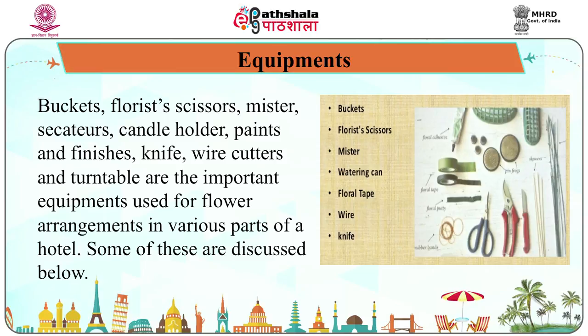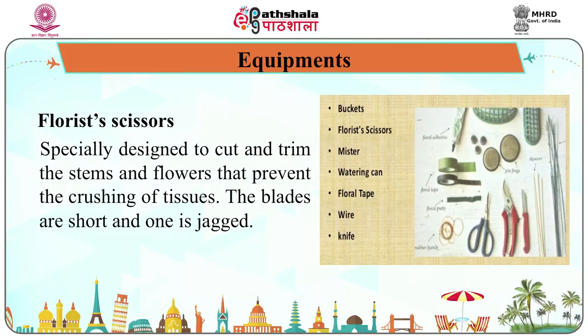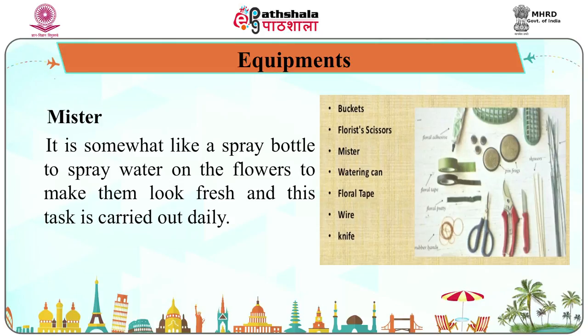The second basic ingredient for flower arrangement is equipment. The first example is florist's scissors, specially designed to cut and trim stems and flowers without crushing tissues; the blades are short and one is serrated. The second example is a mister, somewhat like a spray bottle, used to spray water on flowers to keep them looking fresh, a task carried out daily.